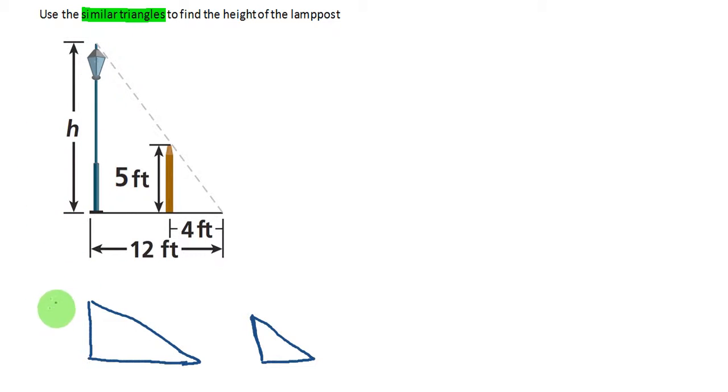So the lamppost is the larger of the two objects. I know it has a height of h, and it has a shadow of 12 feet. Also, the smaller triangle or the smaller post has a height of 5 feet, and it has a shadow length of 4 feet.